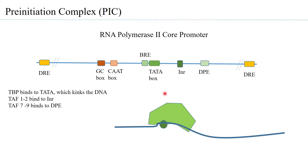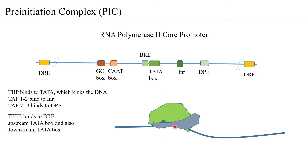The next transcription factor to come and bind is transcription factor 2B (TF2B). The TF2B aligns itself to the TF2D and the DNA in such a way that it binds to the BRE regions — both upstream and downstream — and its binding to TF2D is asymmetric.